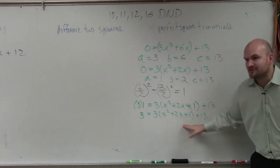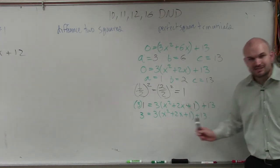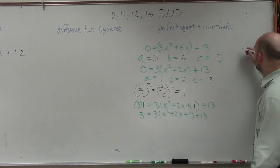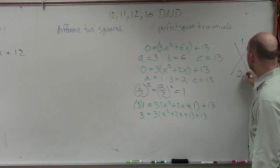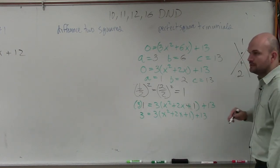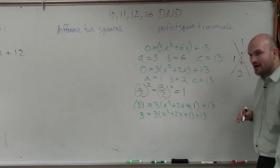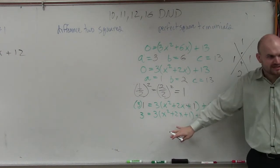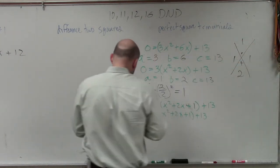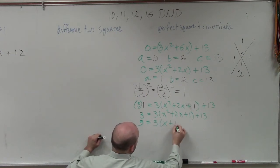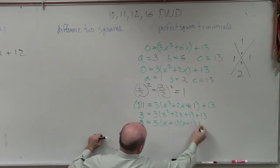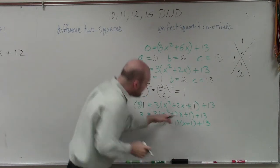Now, remember, we need to factor this. So hopefully, you guys can start getting an idea of what these look like in your head. But if you don't, what two numbers multiply to give you 1, but then add to give you 2? 1 times 1, right? And they have to add to give you a positive 2. So it's going to be 1 times 1. So therefore, I have 3 equals 3 times x plus 1 times x plus 1 plus 13. So you factor this.